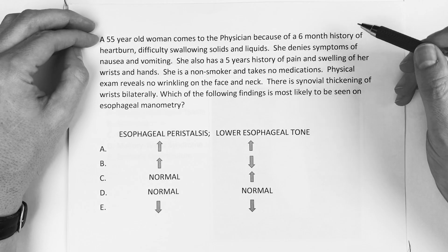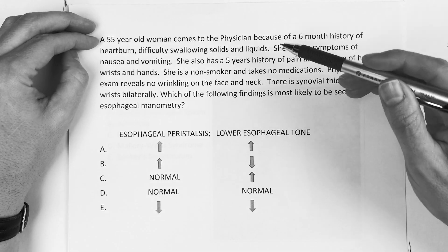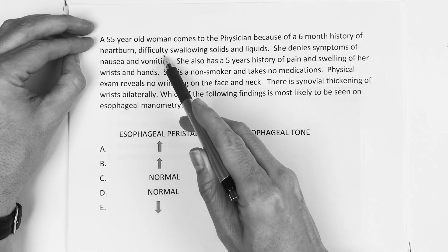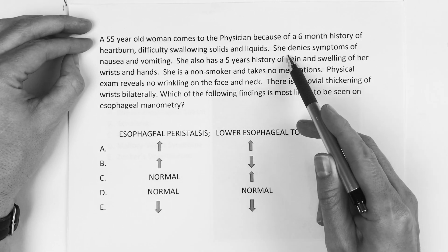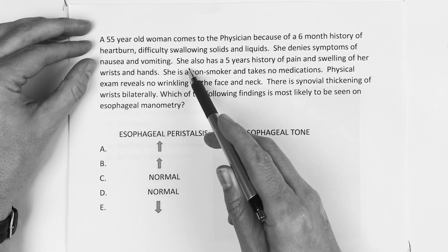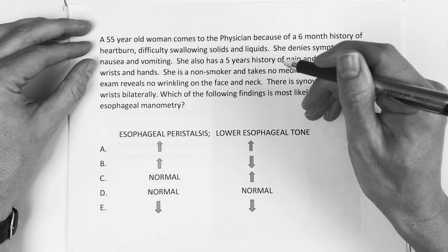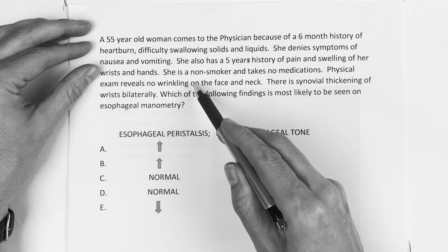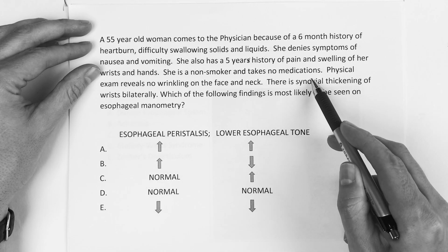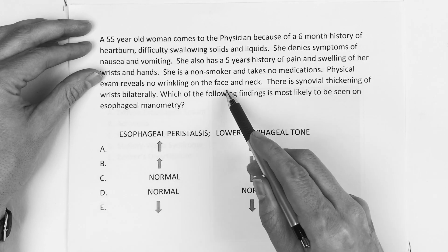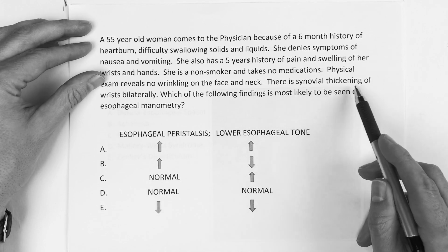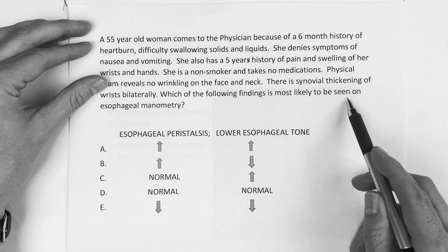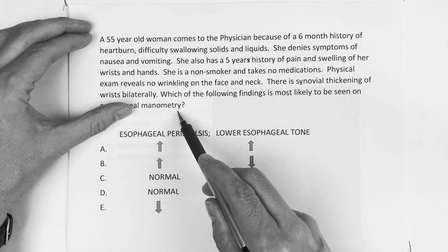First question: a 55-year-old woman comes to the physician because of a six-month history of heartburn and difficulty swallowing solids and liquids. She denies nausea and vomiting. She also has a five-year history of pain and swelling of her wrist and hands. She is a non-smoker and takes no medications. Physical exam reveals no wrinkling of the face and neck, and there is synovial thickening of the wrist bilaterally. Which finding is most likely to be seen on esophageal manometry?